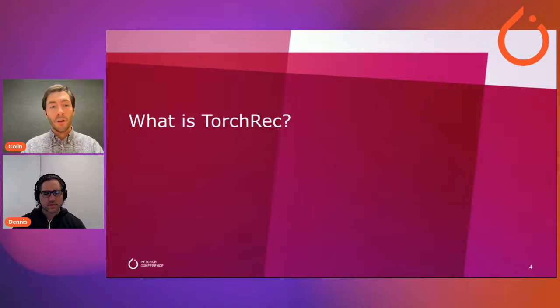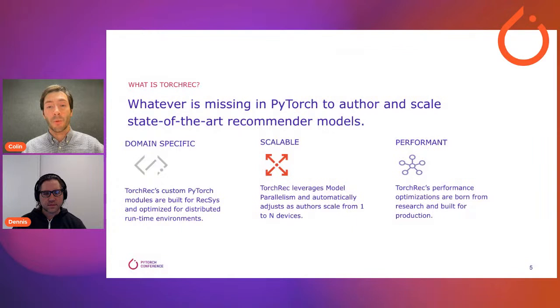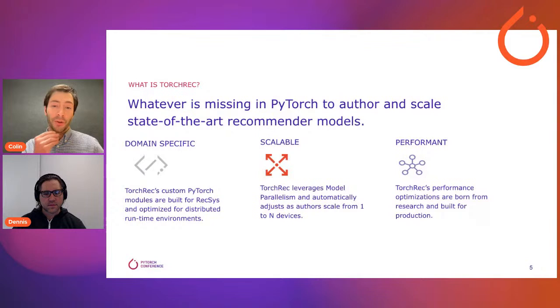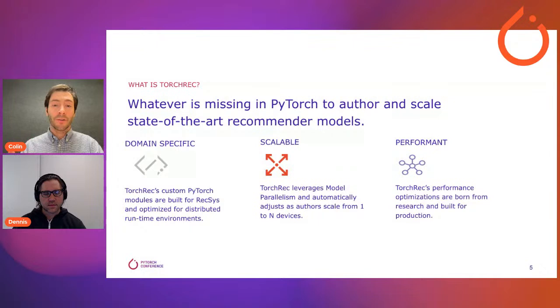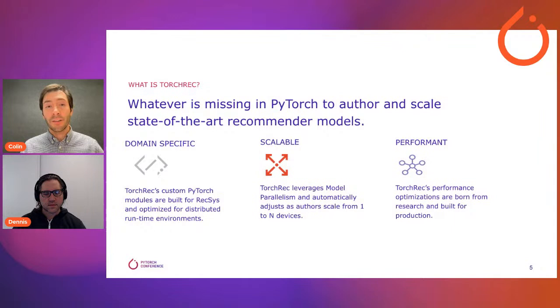So first of all, what is TorchRec? Simply put, TorchRec is a domain library for PyTorch meant to take whatever is missing from PyTorch core to author large, performant, and easy-to-author recommender models. It contains domain-specific concepts and components including recommender system datasets for research. Most importantly, it enables model parallelism for the embedding layers, allowing recommender system authors to scale from one GPU all the way to 64, 128, and multi-node training, as well as inference support. It's also designed to be performant and is used internally at Meta to power some of our largest recommender models.